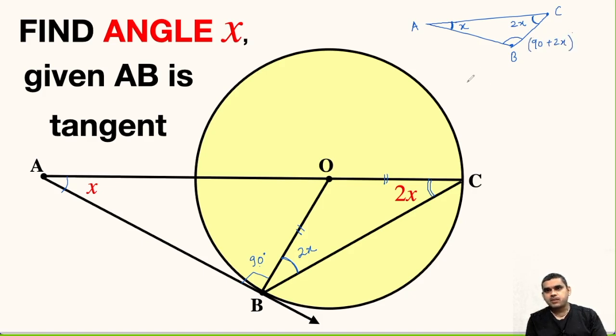Using angle sum property of a triangle, we can write x plus 2x plus 90 plus 2x equals 180 degrees.